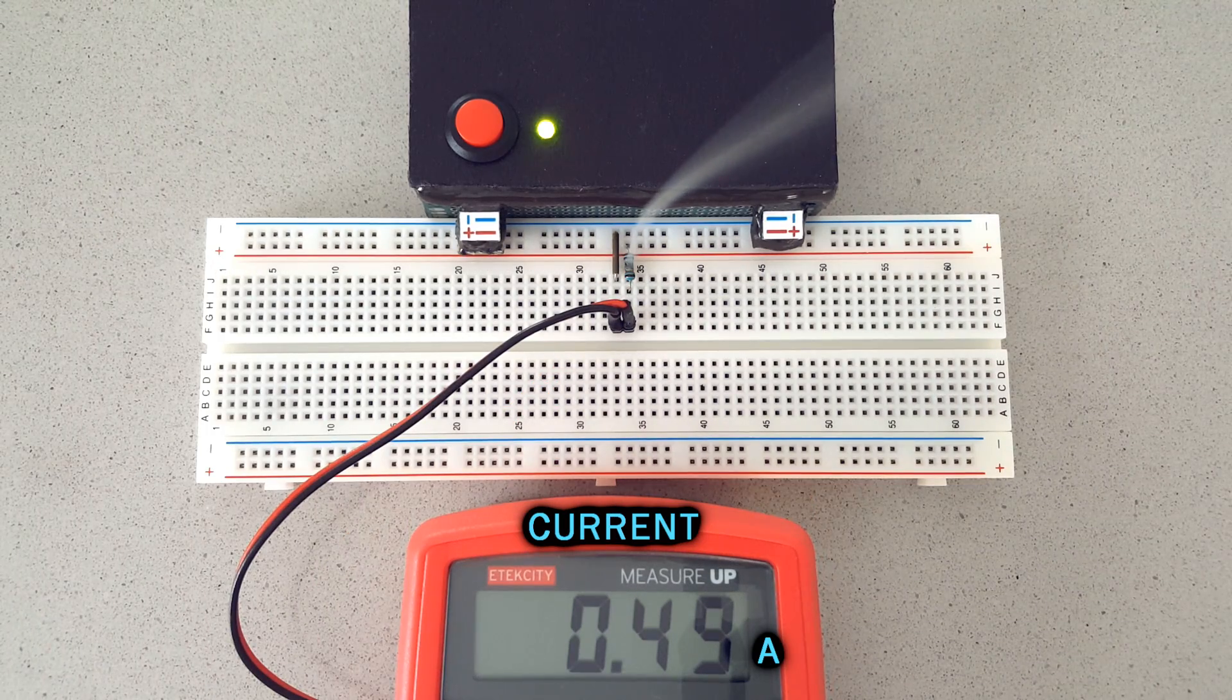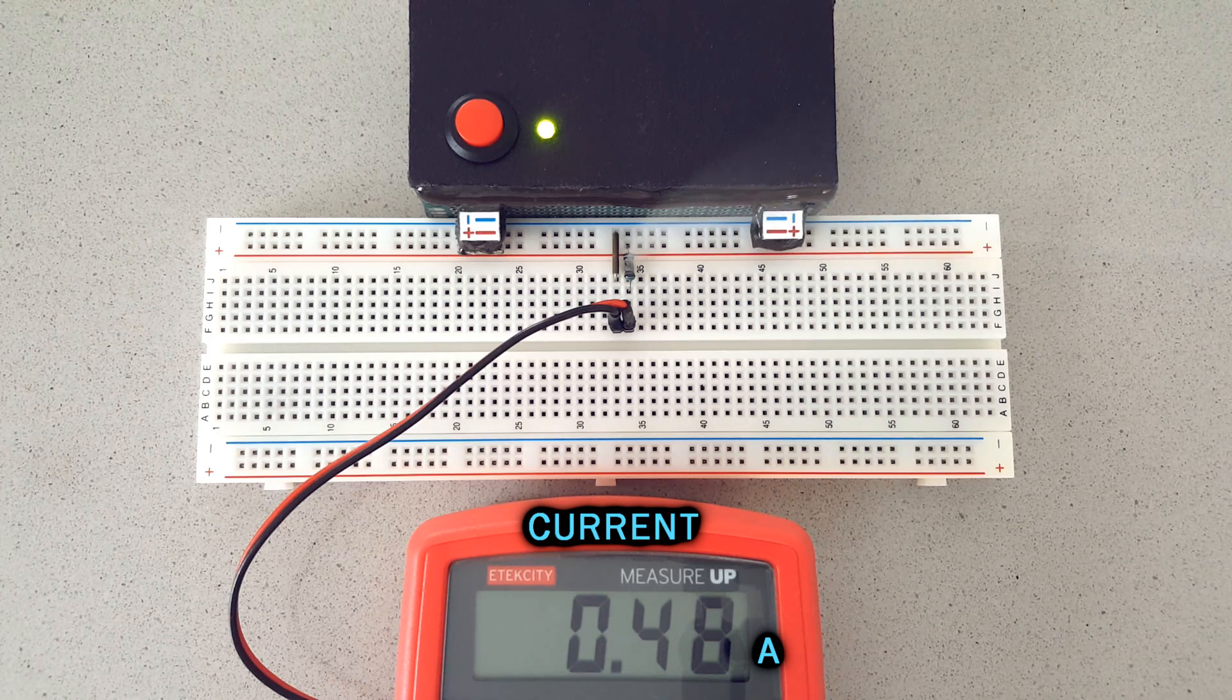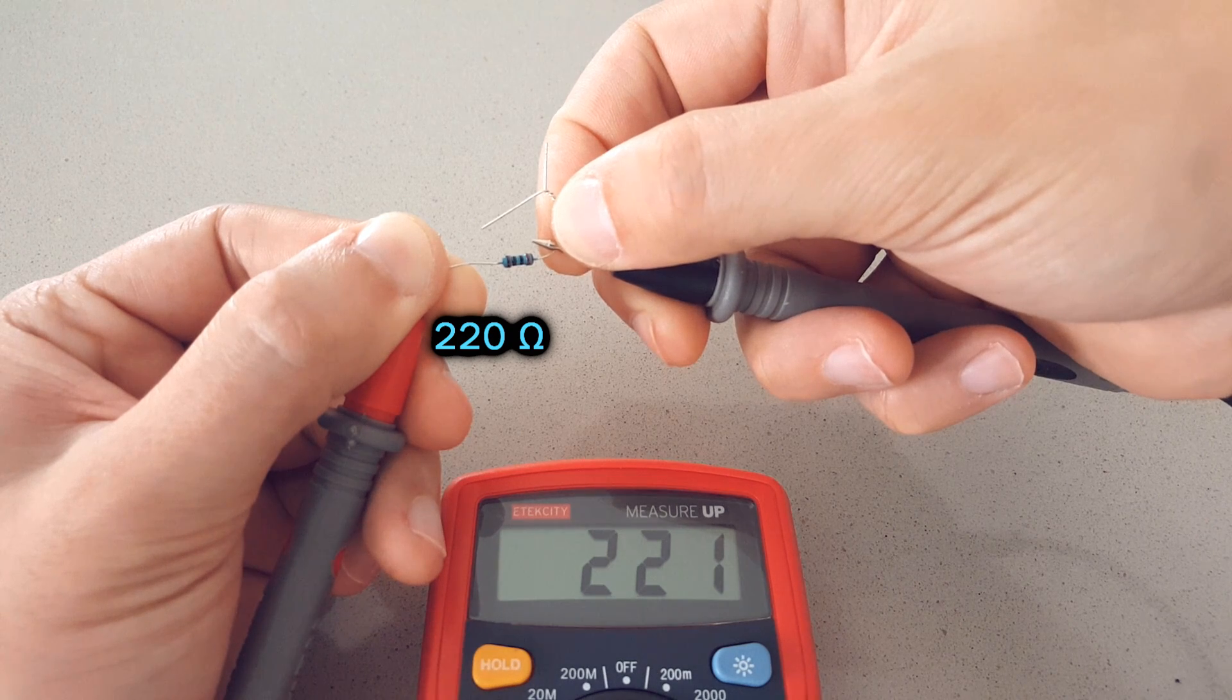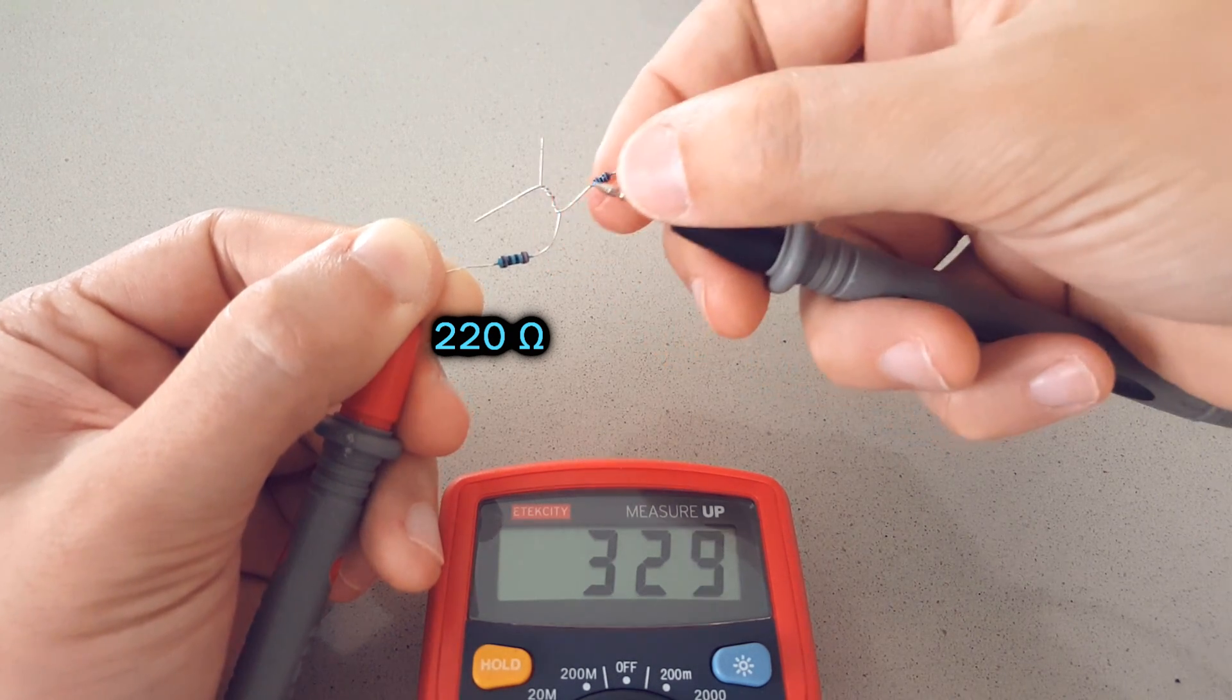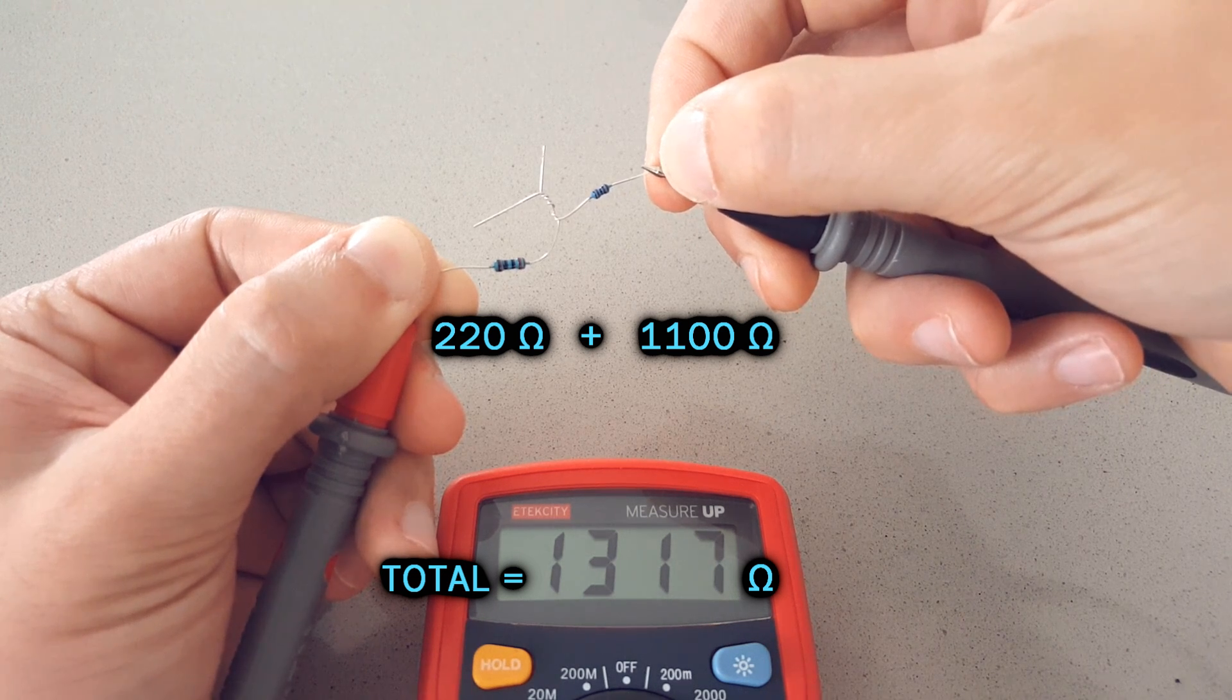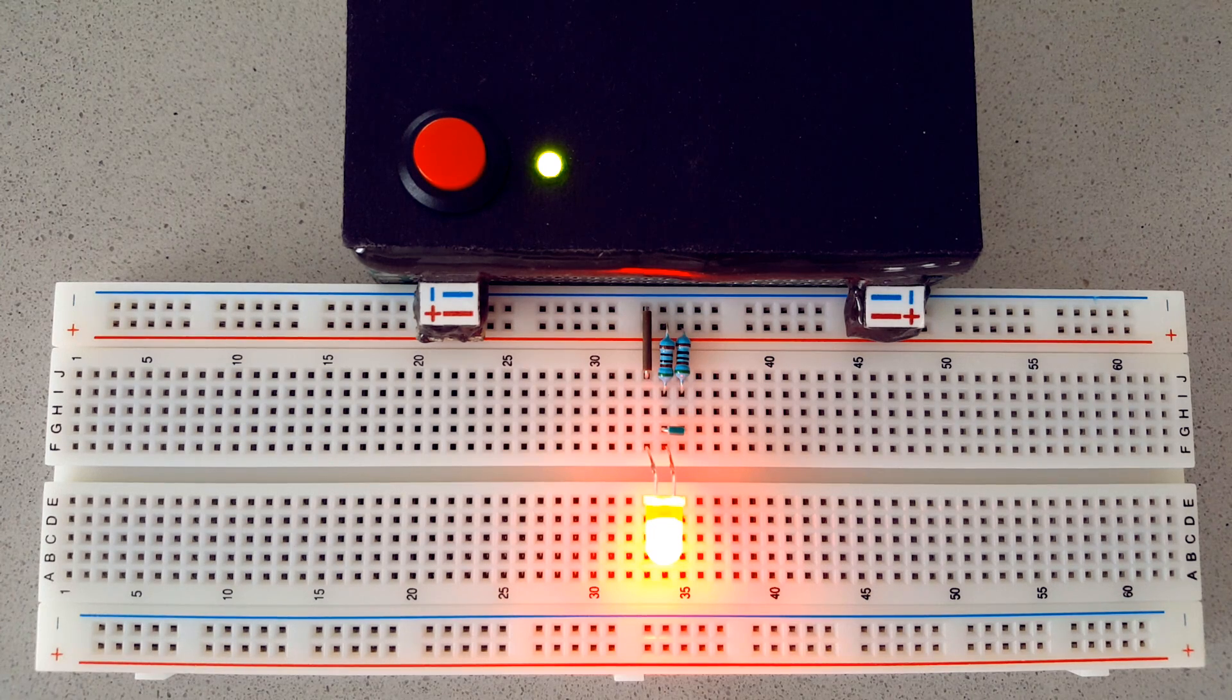Since resistors generate heat depending on the amount of current passing through them, they are normally used for low current applications. You can also add two or more resistors in series to add up their resistance values, which is useful if you need a particular value that is not available as a single resistor. Or you can connect them in parallel to share the current between them.